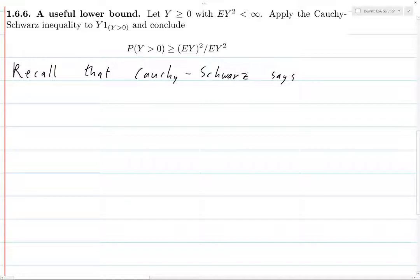What does it tell us? If you take the integral of f times g d mu, then this is less than or equal to the 2-norm of f times the 2-norm of g.